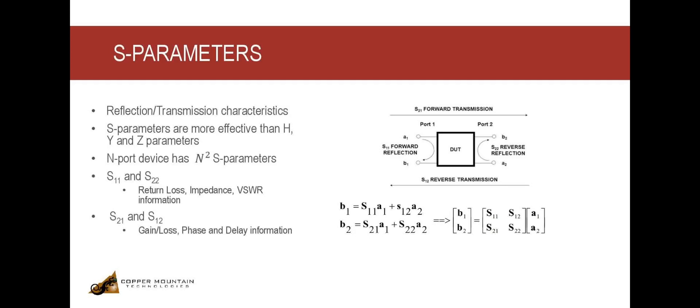Here, A1 is the incident power wave to the device which could result in a portion of the wave being reflected back to port 1, as indicated by B1, and a part of the wave being transmitted through port 2, as indicated by B2.